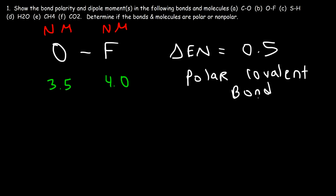Fluorine pulls the electrons toward itself, and because it's more electronegative, it acquires a partial negative charge. Oxygen becomes electron deficient and has a partial positive charge — that's the bond polarity of the oxygen-fluorine bond. For the dipole moment, we point the arrow toward the most electronegative element, which in this case is fluorine. That's the dipole moment of the OF bond.